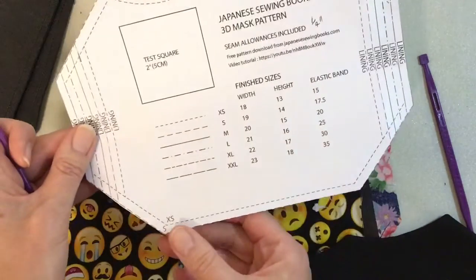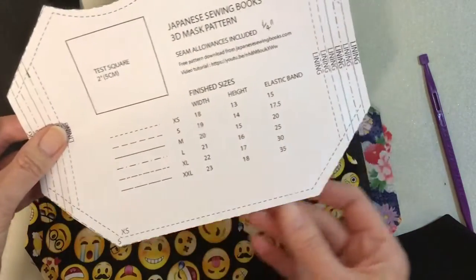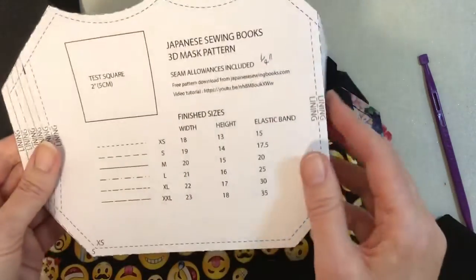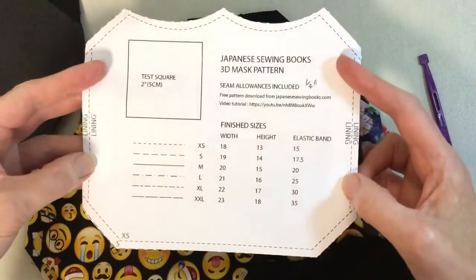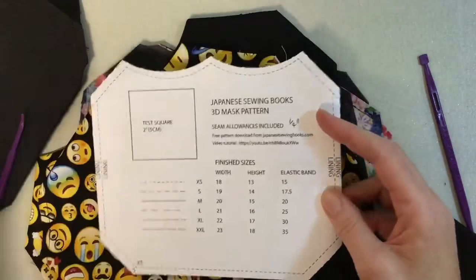This is a small, so that's this size here, and I just cut around the line I want to use. When you go to cut the lining, you have to fold that back to the right line. There's one size smaller on this sheet, then you cut out your lining.